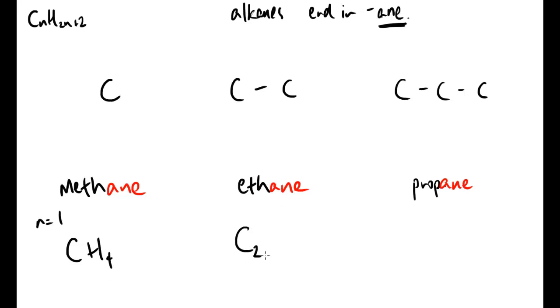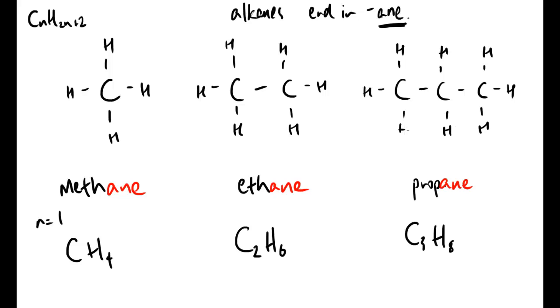For ethane, we would end up with C2H6. Propane, C3, double it, add two, H8. And then we have to obviously fill in that this was the diagram showing the molecule of each one. Methane would be as such, ethane would be like this, and finally propane like this with the eight hydrogens attached.